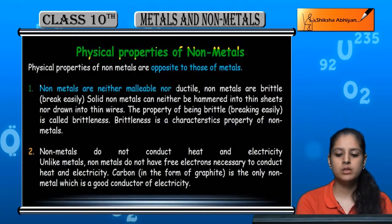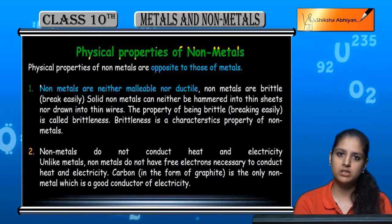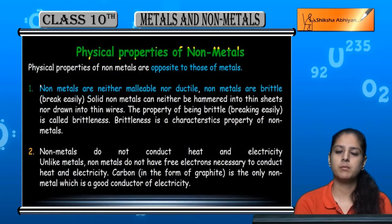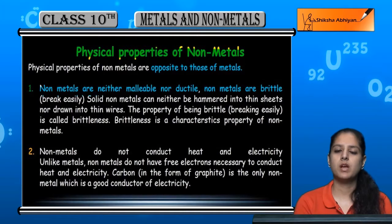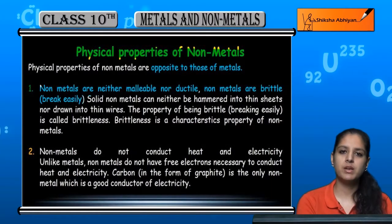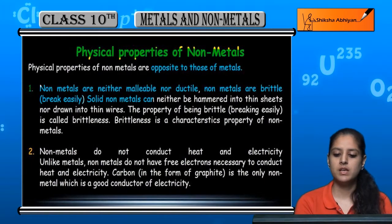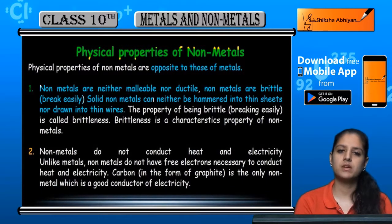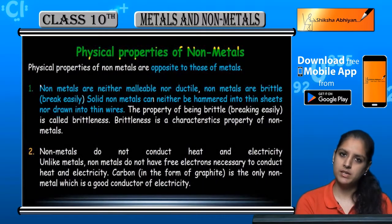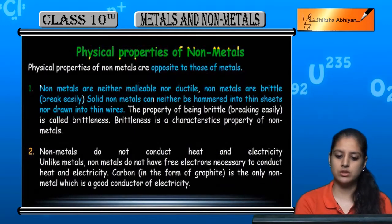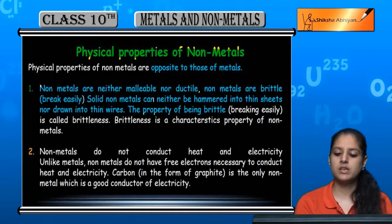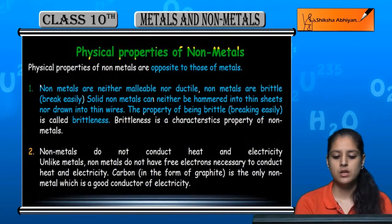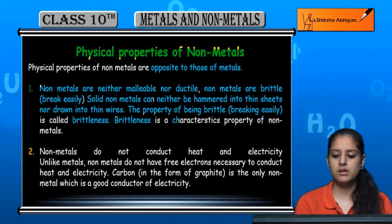Non-metals are neither malleable nor ductile. They do not show malleability or ductility — they are brittle. If you heat and hammer them, they do not convert into sheets; they break easily. Solid non-metals cannot be hammered into sheets or drawn into wires. This property of easily breaking is called brittleness. So, the characteristic property of non-metals is brittleness.